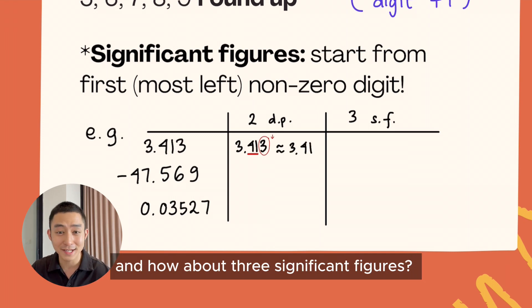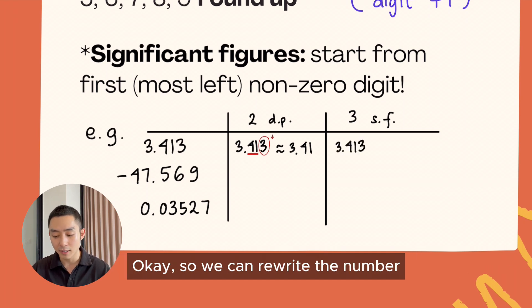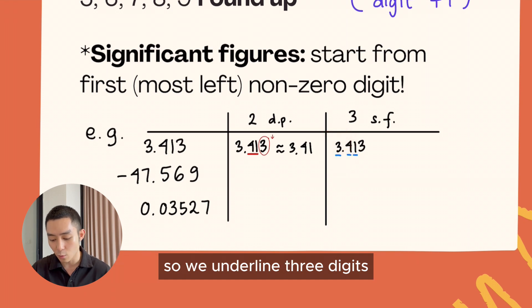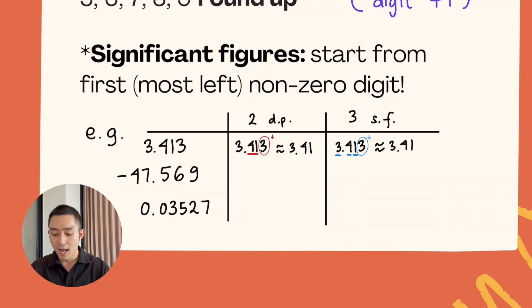And how about three significant figures? We can rewrite the number. The first most left non-zero digit is three, so we underline three digits. The next digit is also three, so we go down, and apparently it's the same answer, 3.41.